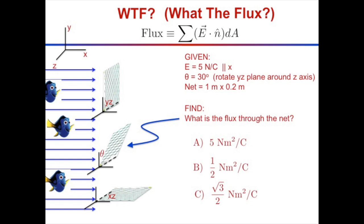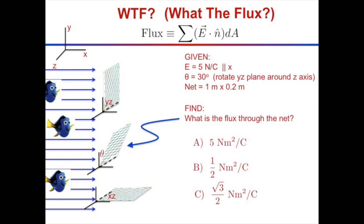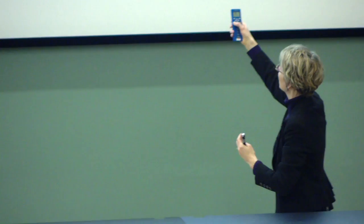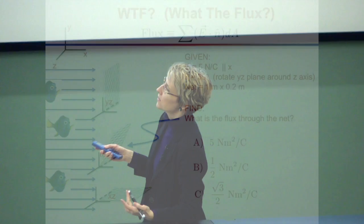The flux is E dot n-hat dA. I want to calculate it for this situation: given an electric field of 5 newtons per coulomb parallel to the x-direction, and an area rotated by theta equals 30 degrees from the yz-plane around the z-axis. The net is 1 meter by 0.2 meters. What's the electric flux through the net?